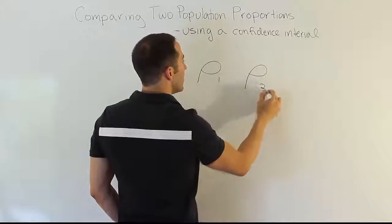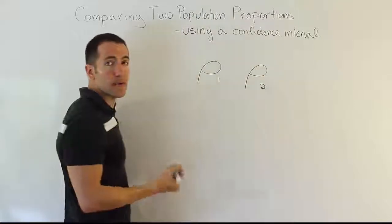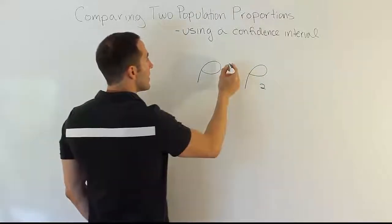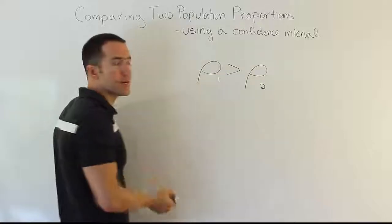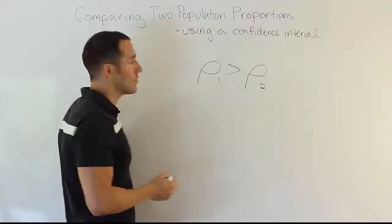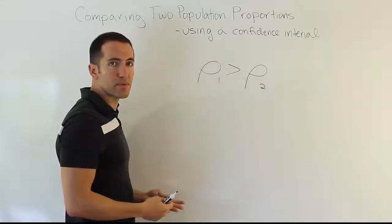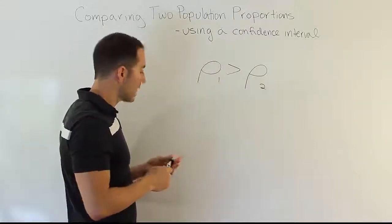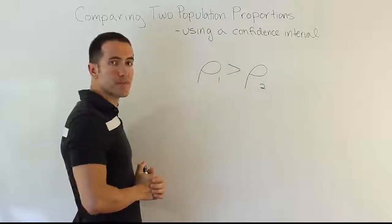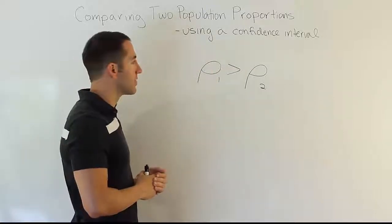So we might compare rho one versus rho two. Like, we might say the divorce rate in the United States is greater than the divorce rate in Canada, and we might want to eventually do a hypothesis test for this claim. Or we might want to form a confidence interval that will show whether this is true or not, right? The idea we're going to look at first is confidence intervals. Afterwards, we'll discuss hypothesis testing.